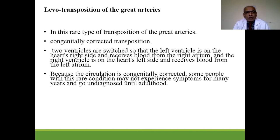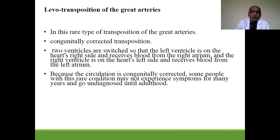In congenitally corrected transposition, the two ventricles are also switched — the left ventricle is on the heart's right side receiving blood from the right atrium, and the right ventricle is on the left side receiving blood from the left atrium. Because of this natural correction, it is congenitally corrected. Patients are often not diagnosed until adulthood as there are no symptoms.